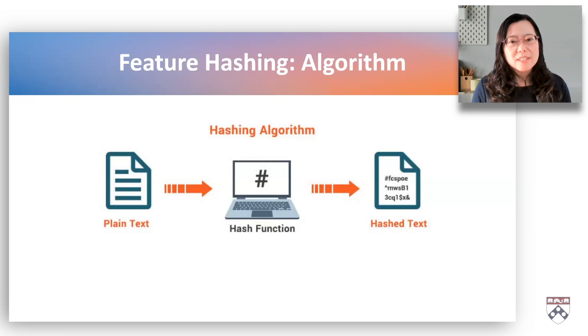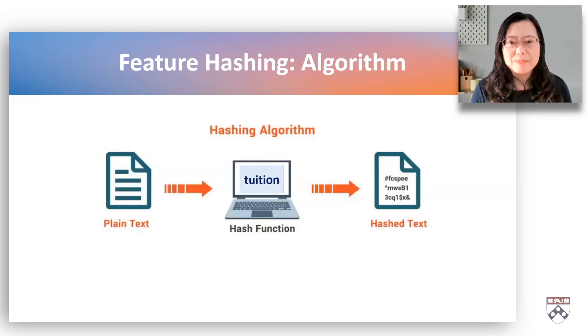First, each feature, say a word tuition, is passed into a hash function. The hash function maps a feature to an index in a fixed dimensional space, which is much smaller than the number of unique categories in the original feature.